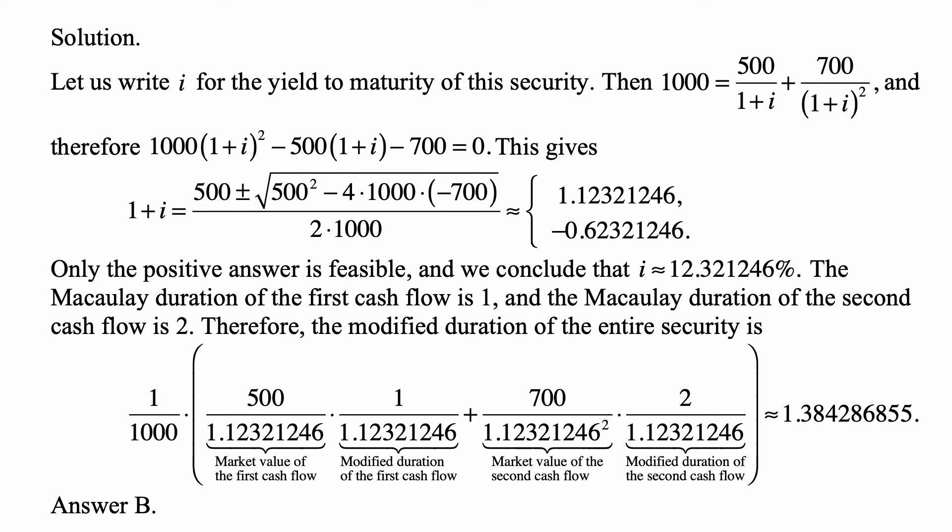If we multiply it out by 1 plus i squared, then 1,000 times 1 plus i squared minus 500 times 1 plus i minus 700 equals zero. We can treat this as a quadratic equation with respect to 1 plus i as the unknown. So 1 plus i equals 500 plus or minus the square root of 500 squared minus 4 times 1,000 times negative 700, and the whole thing divided by 2 times 1,000.